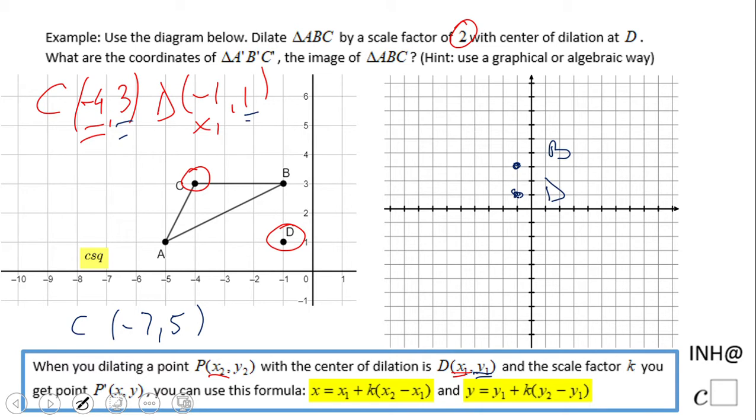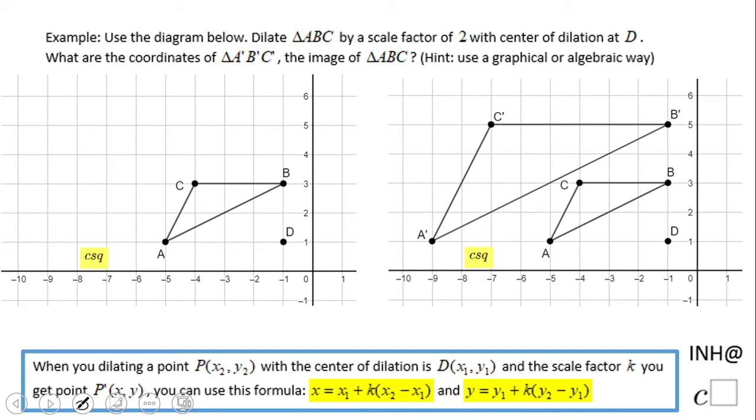You count the appropriate units from the center to get each prime point. You can get this graphically, and you can see the transformation visually.